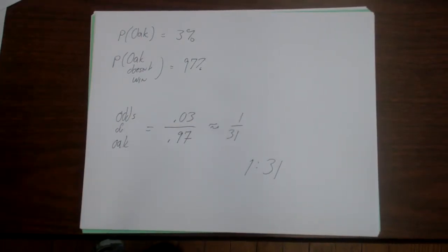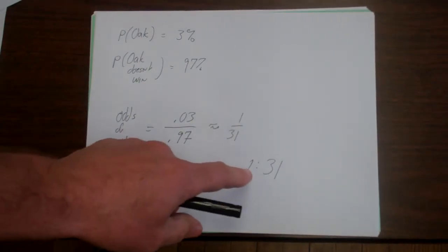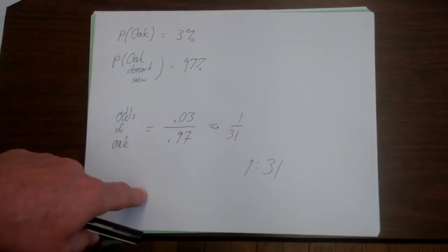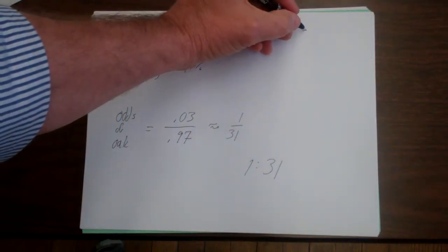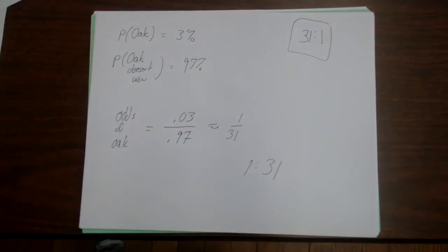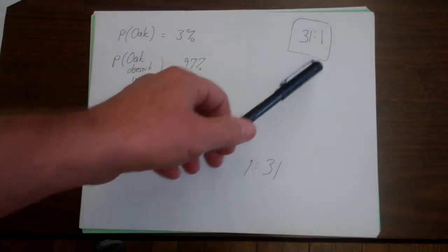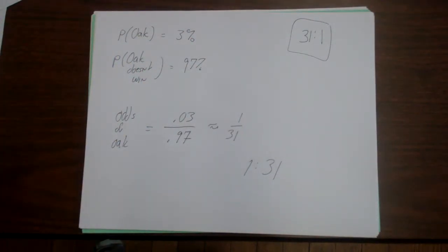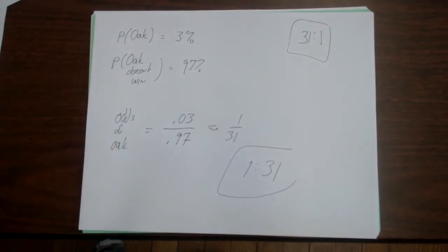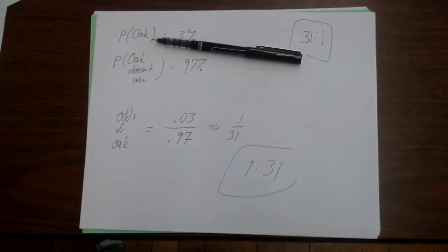Now, just to make things confusing, in math class we say 1 to 31. If you actually go out to the racetrack or you go into a parimutuel place when you're betting, they actually would say that the odds of Oakland winning, the odds are 31 to 1. And they just flip it, mainly because it's easier to say. But in math class we're going to say it like this, 1 to 31. And that's how you do odds.